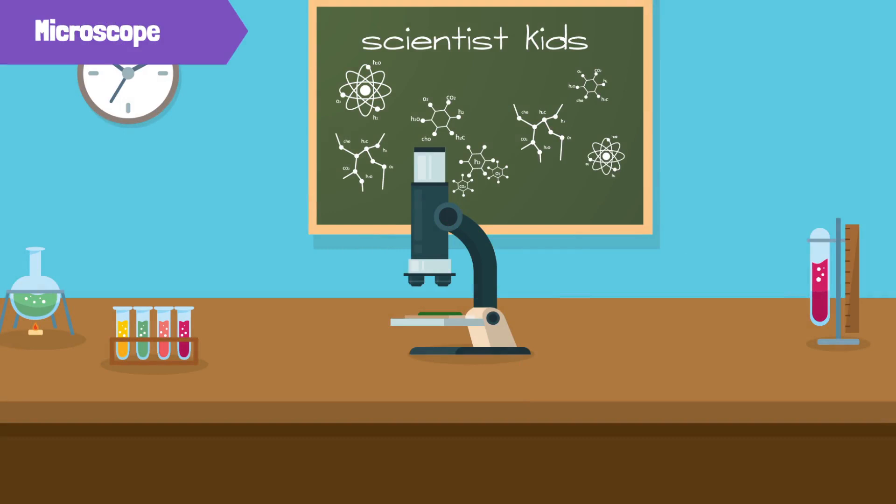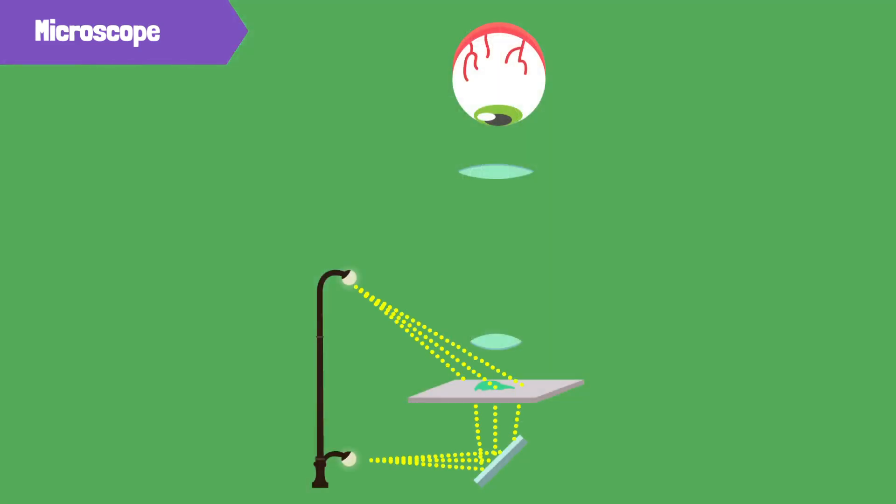However, microscopes used in schools and laboratories are actually compound microscopes. They use at least two lenses to produce a magnified image.